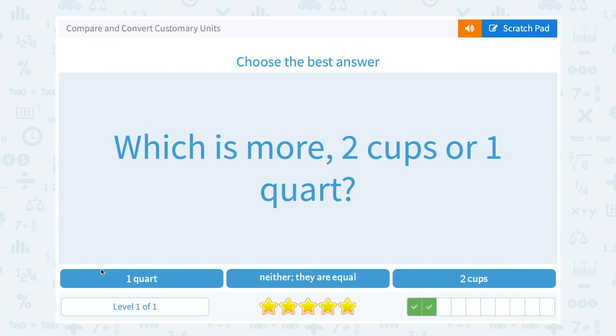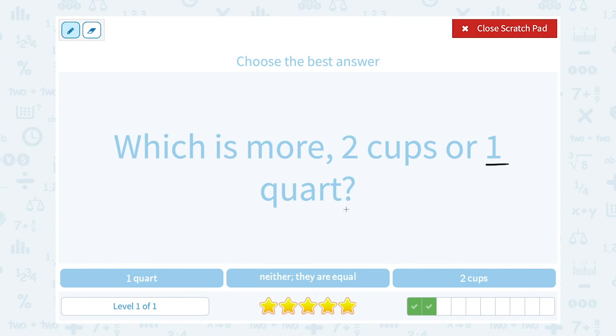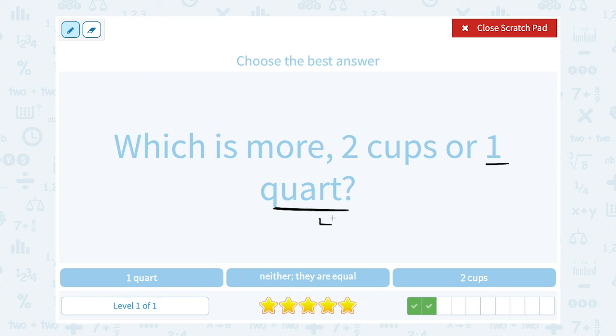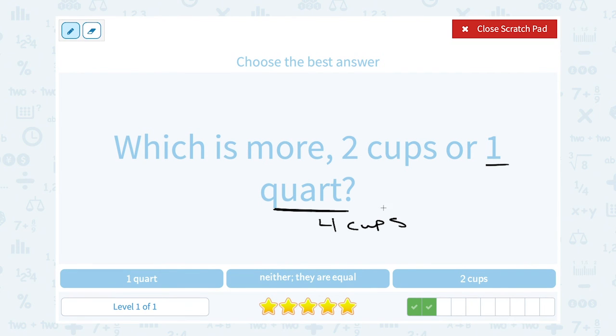Which is more, 2 cups or 1 quart? Again, you want to know your conversion or you want to think how many cups are in a quart. So there's actually 4 cups in 1 quart. Or another way to say that is that 1 quart is equal to 4 cups. So which would be more, 2 cups or 1 quart? 1 quart is more because it's equal to 4 cups, and 4 cups would be more than 2 cups.